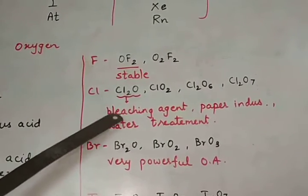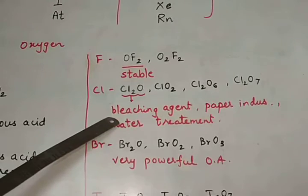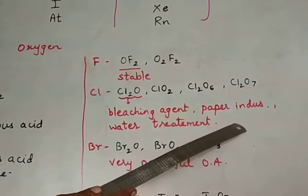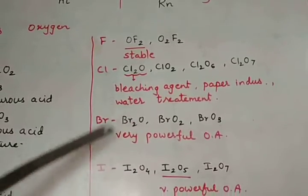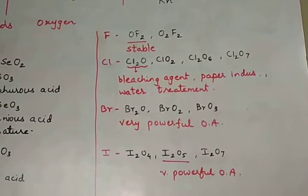Out of this, the first oxide acts as a bleaching agent. It is also used in paper industry and also used in water treatment because it contains chlorine.